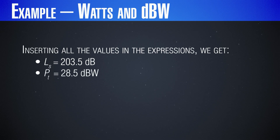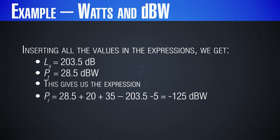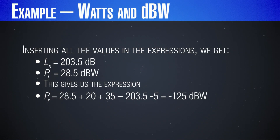Keeping all of this in mind, we can immediately compute the received power in dBW. The received power Pr equals 28.5 dBW (transmitted power), plus 20 dBi (satellite antenna gain), plus 35 dBi (ground station antenna gain), minus 203.5 dB (free space losses). I have also subtracted 5 more dBs for additional losses — for example, 3 dBs for polarization mismatch and 2 dBs for atmospheric attenuation. The result is approximately −125 dBW for received power.